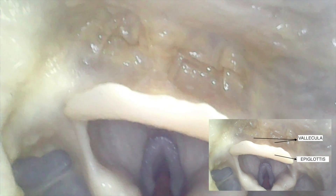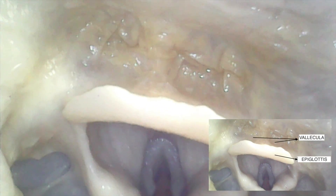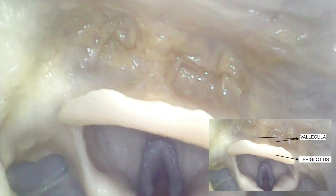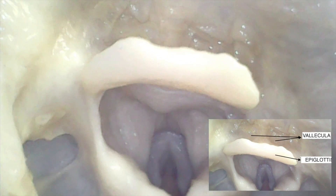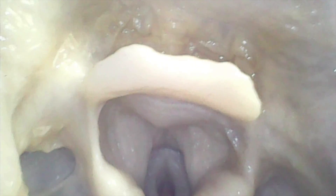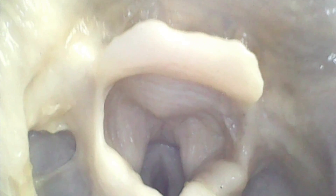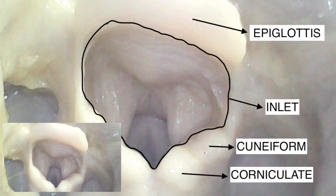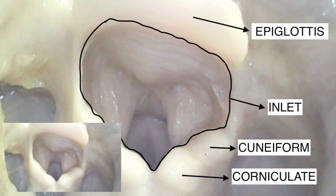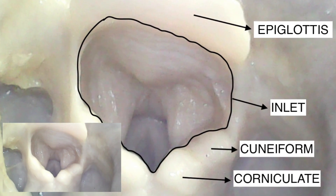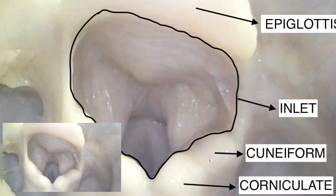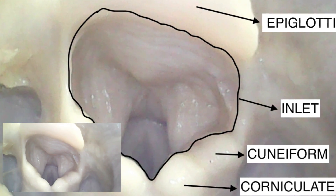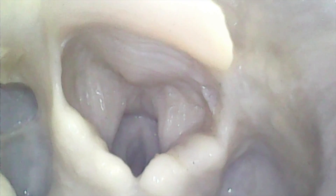This is how it looks like in the center — you can see the epiglottis. Above, there are vallecula, and below and behind the epiglottis you can see two aryepiglottic folds. In their lower part, these folds are bulged because of the underlying corniculate and cuneiform cartilages. This is how the laryngeal inlet looks like.